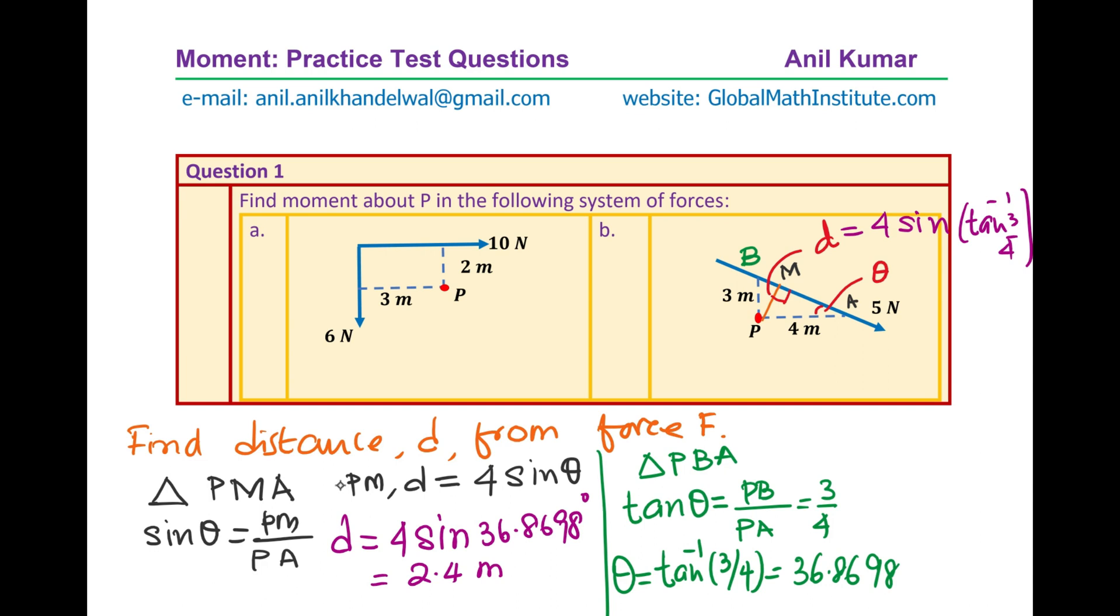Once you have found the shortest distance and you know the force, you can now find the moment about point P. So now the moment about point P will be 5 times the distance which is 2.4, and that is equal to 12 newton meters. You have to include the direction also, so direction about point P will be clockwise.